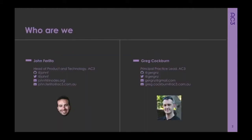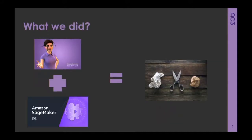So who are we? This is John — say hi John. John was co-founder and CTO of Bulletproof and is now head of product and technology at AC3. I've been at Bulletproof about a third as long as John, and now moving across to AC3 I lead up all of our practice leads. You can find me as Gurg and Zed pretty much everywhere.